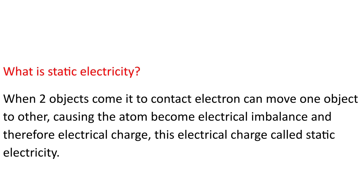What is static electricity? When two objects come into contact, electrons can move from one object to another, causing the atom to become electrically imbalanced and therefore create an electrical charge. This electrical charge is called static electricity.